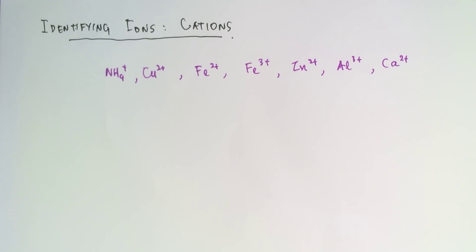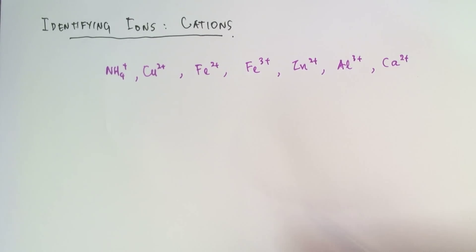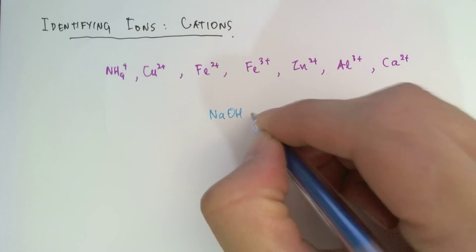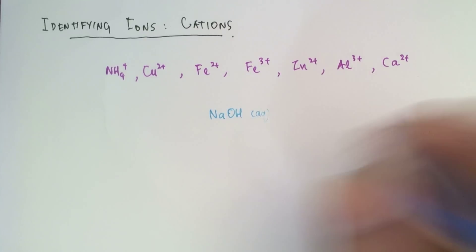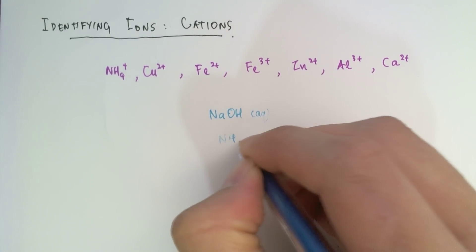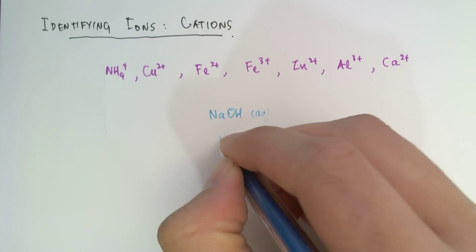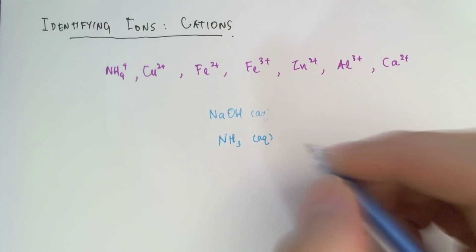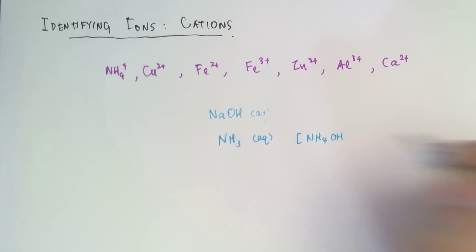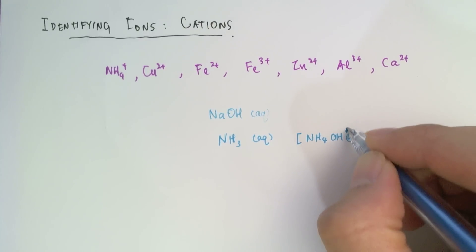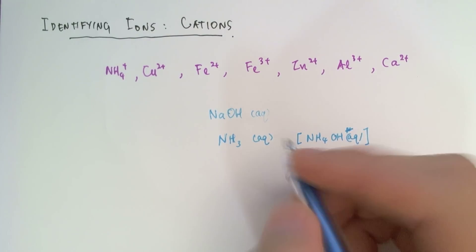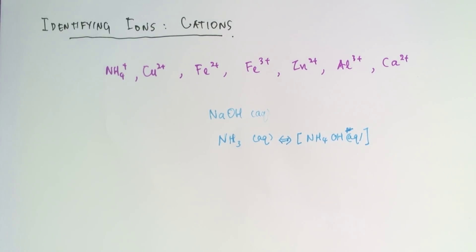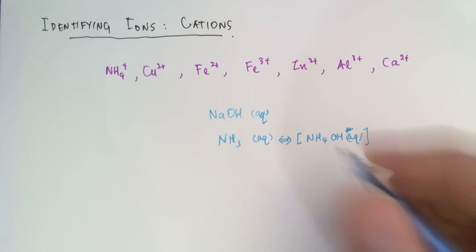And then we will draw a flowchart to put them all together. So the two reagents that we'll need to test for the presence of these cations are sodium hydroxide aqueous, a strong alkali, and we'll also be using ammonia solution, which you might sometimes see as being written as NH4OH aqueous.